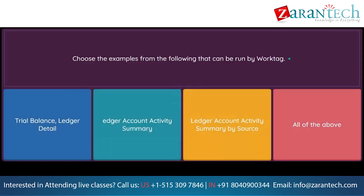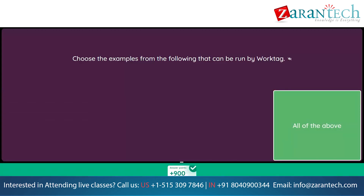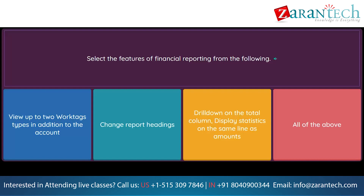Question: Choose the examples from the following that can be run by work tag. Option 1: trial balance, ledger detail. Option 2: ledger account activity summary. Option 3: ledger account activity summary by source. Option 4: all of the above. Question: Select the features of financial reporting from the following. Option 1: view up to two work tag types in addition to the account. Option 2: change report headings. Option 3: drill down on the total column, display statistics on the same line as amounts. Option 4: all of the above.